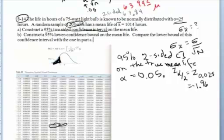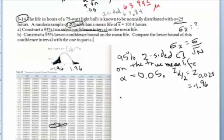Looking for an area of 0.025 in the z-table, that's going to be at minus 1.96. And checking the other side, we get plus 1.96. So the .975 area corresponds to less than 1.96, confirming we have minus 1.96 and plus 1.96 as our critical values.